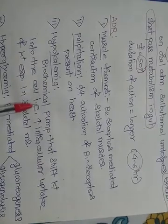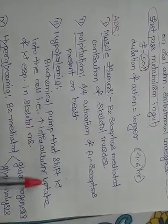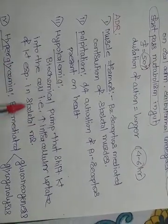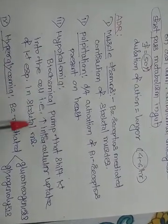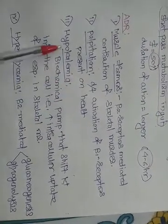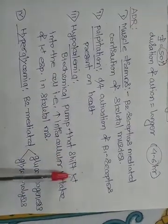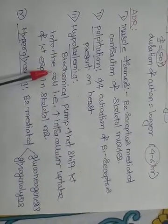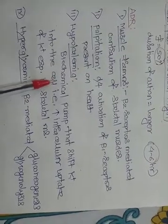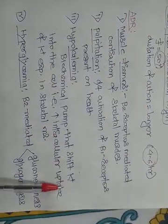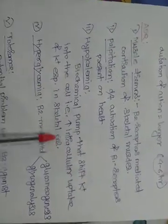Hypokalemia occurs because a biochemical pump shifts potassium into the cell — specifically, it increases intracellular uptake of potassium, especially in skeletal muscle, moving it from the blood into the cell. That is why there is hypokalemia.